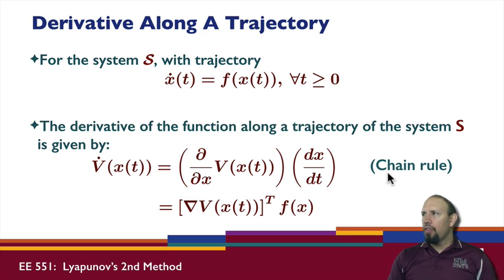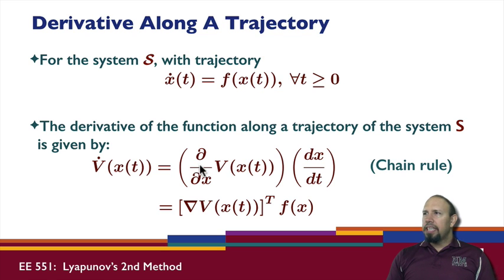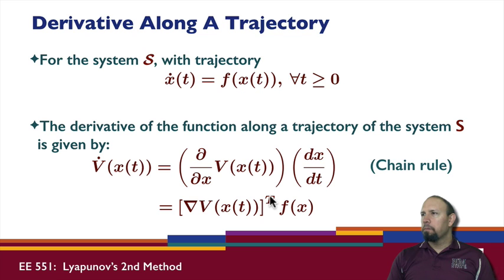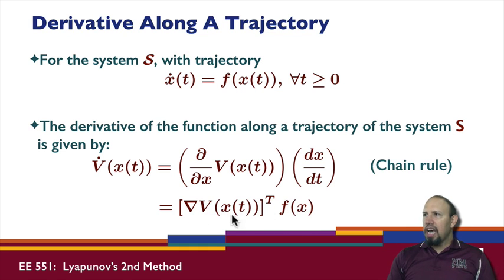As a scalar function of time, we can use the chain rule to evaluate the derivative. The chain rule for a scalar value of a vector variable gives us the partial derivative of v with respect to x times the partial derivative of x with respect to t. The partial of v with respect to x is the gradient — actually the gradient transpose. And the derivative of x with respect to t is this function here. So this is a vector quantity, this is a vector quantity, and together they produce a scalar.